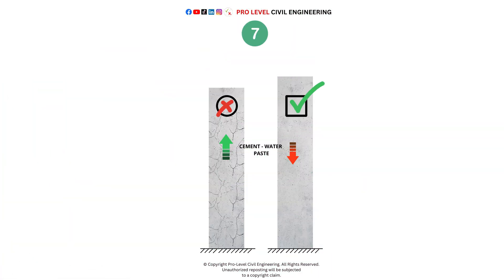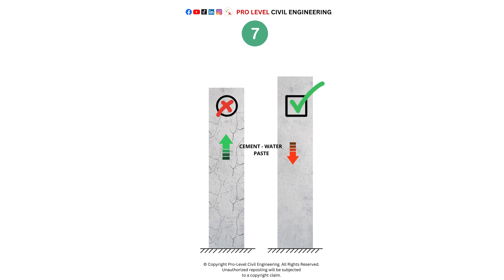7. Avoiding concrete with a high percentage of cement water paste — creep in concrete primarily occurs in the paste, not in the aggregate. This means that the more paste a concrete mix contains, the higher the creep will be, because the paste is the part that deforms over time under sustained loads.